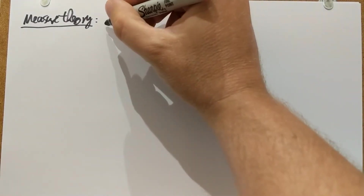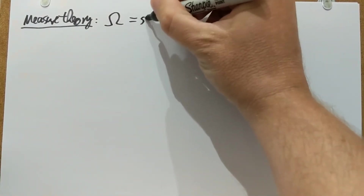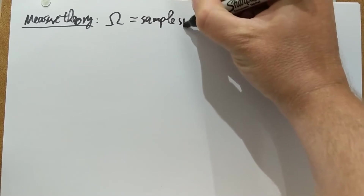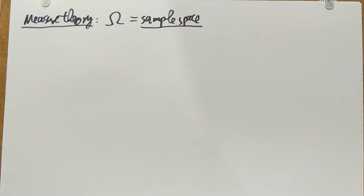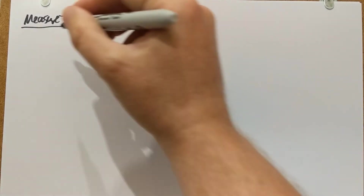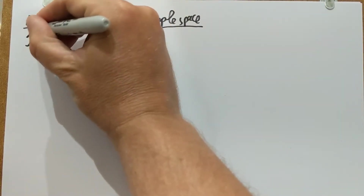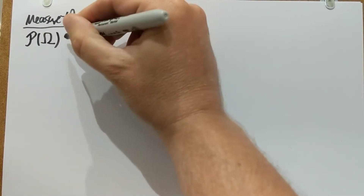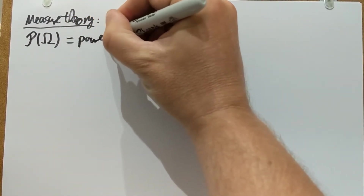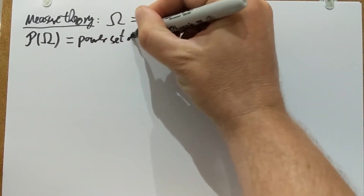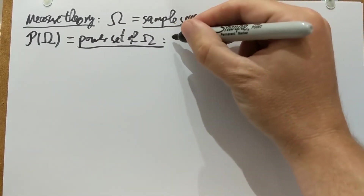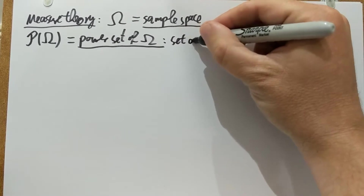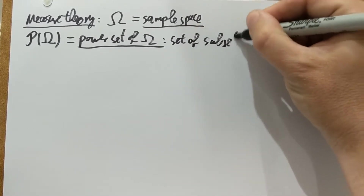We are going to be given a set omega, which I'm going to call the sample space. We're going to think about this set as the set of possible outcomes of an experiment, and this could in general be very complicated. Now what we are looking at first — the very first approximation — is going to be the power set of omega, which is just the set of all subsets of omega.